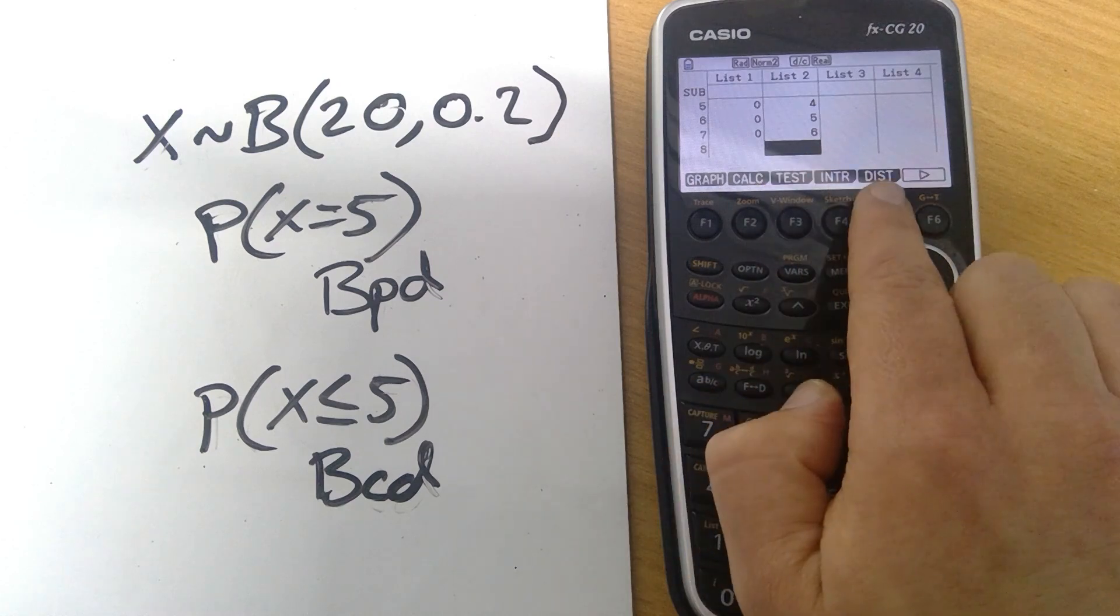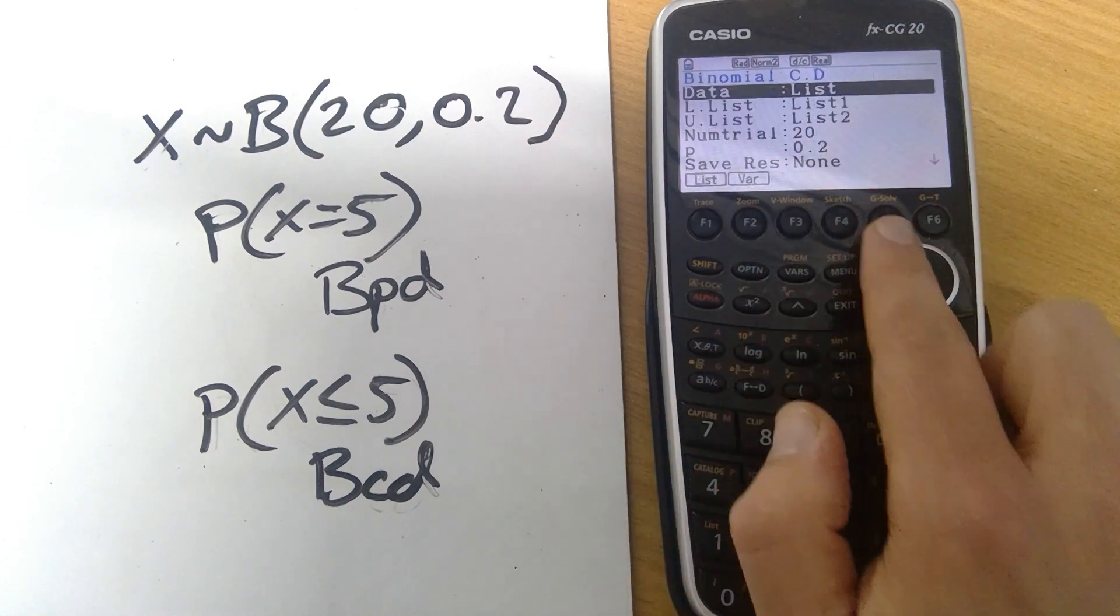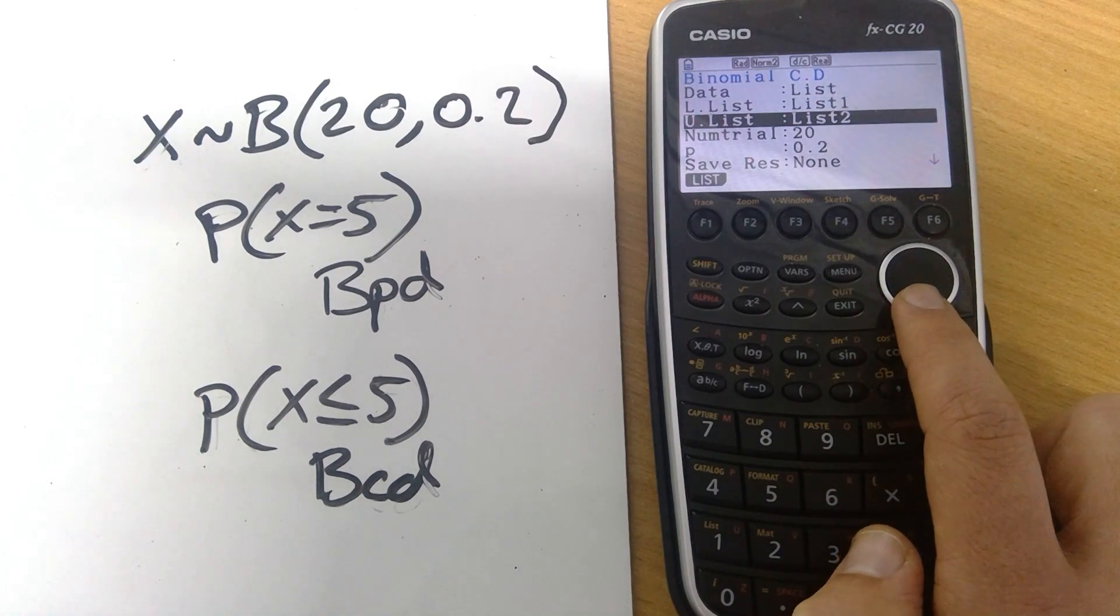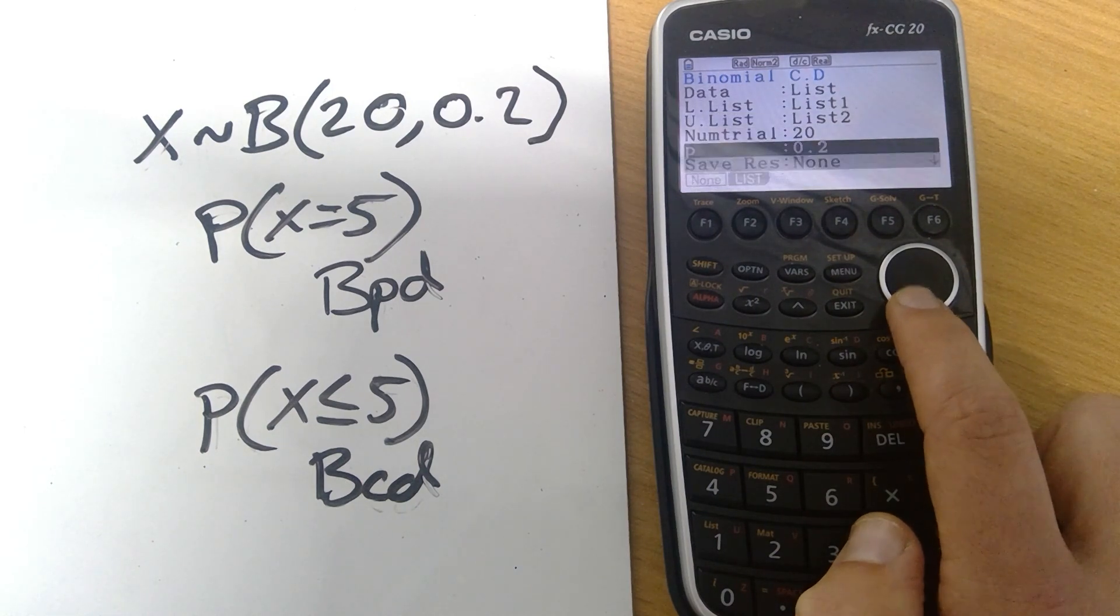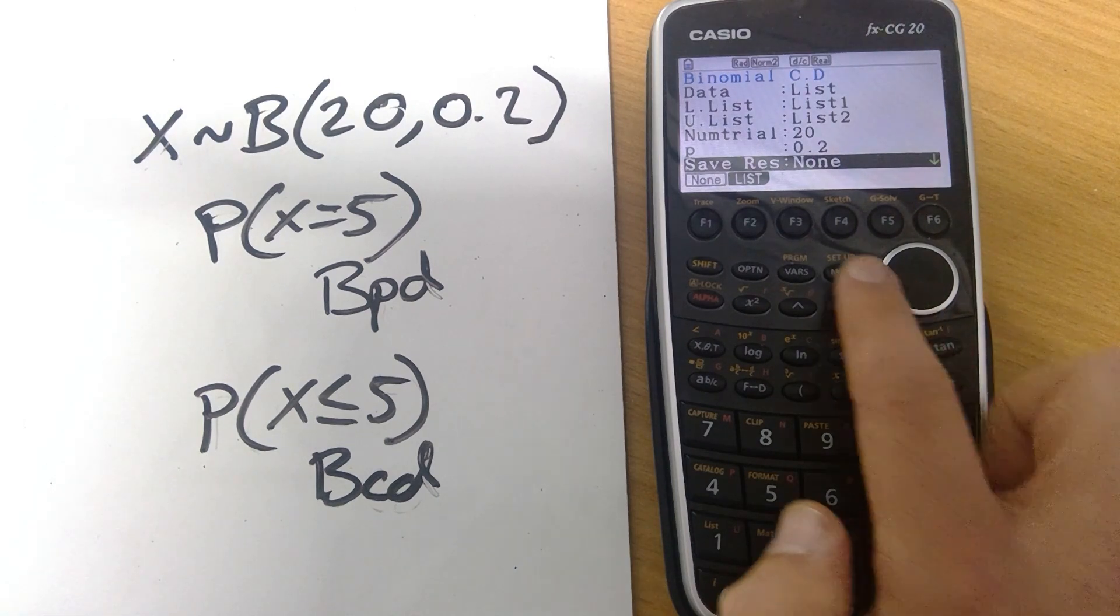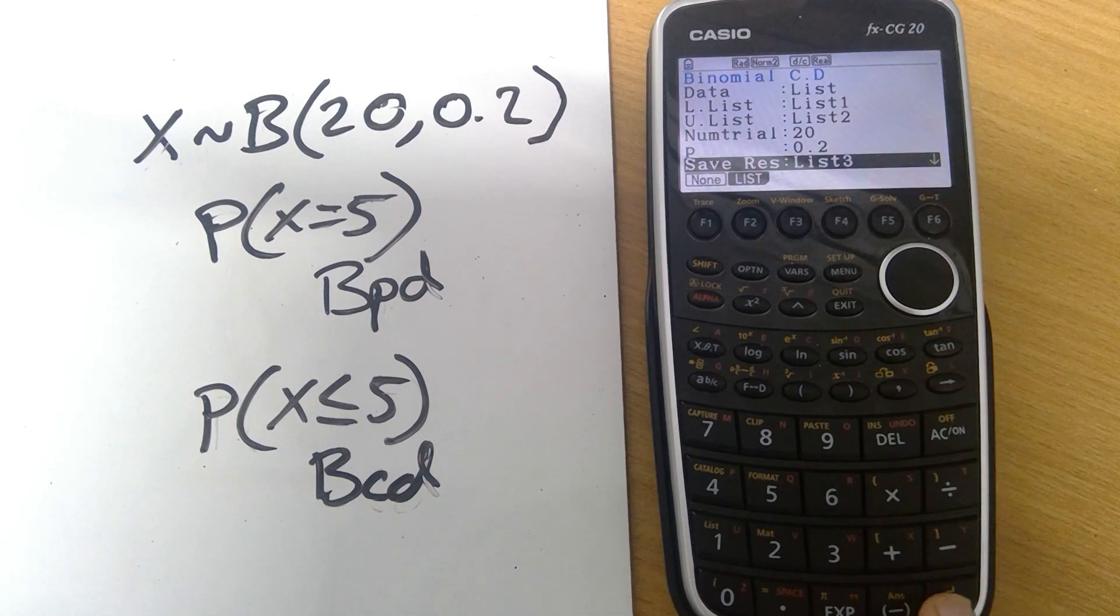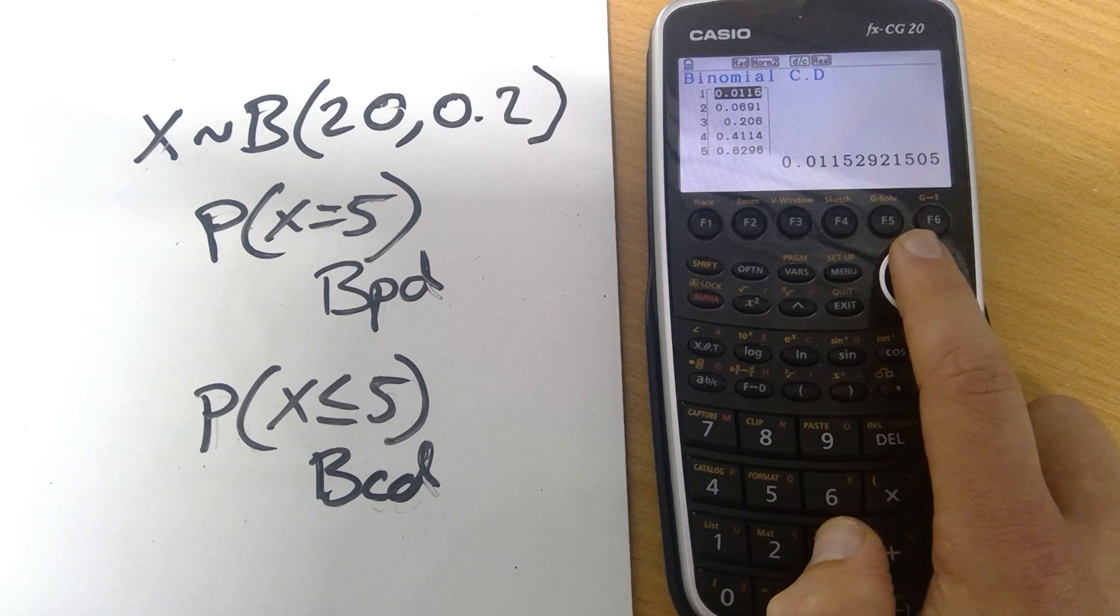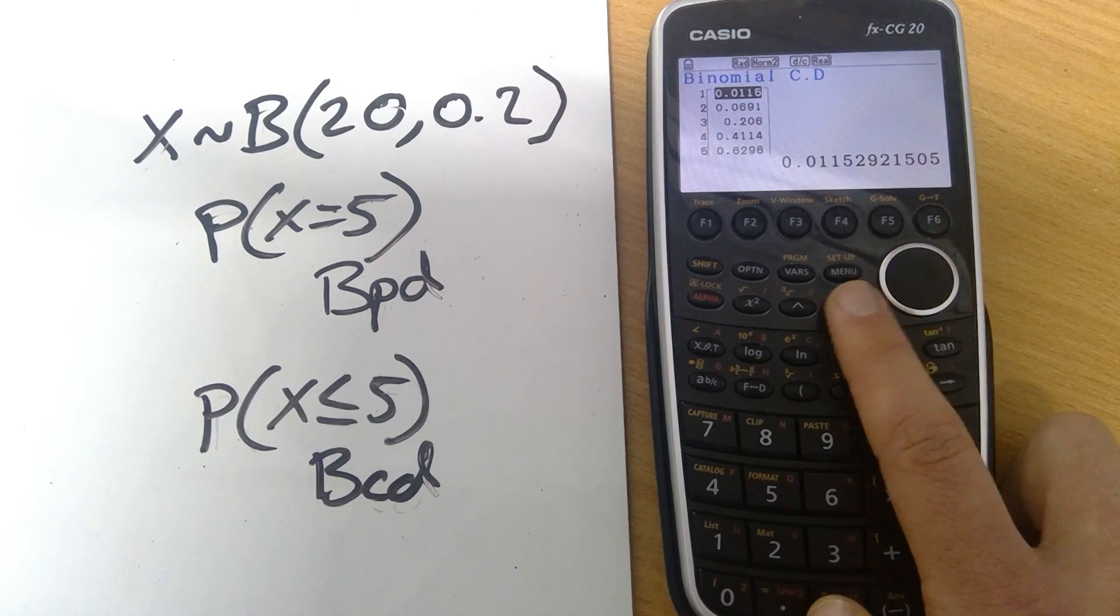So now we've got those as our lower and upper values for the cumulative distribution and if we press distribution binomial back to the cumulative distribution now it's going to take from my list 1 from my list 2 so 0 to 0, 0 to 1, 0 to 2 and so on. I've got my value for n, my value for p. I wanted to save these values so I'm going to put these in list number 3, press execute. And there are all of those values and if you check these against a formula book set of tables you will see that it is exactly the same.